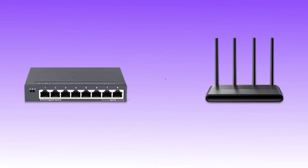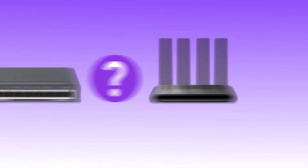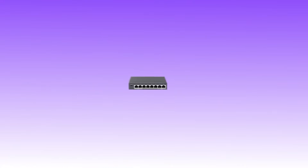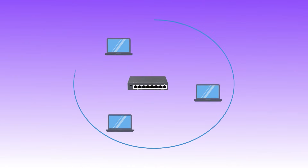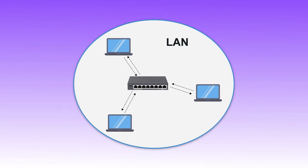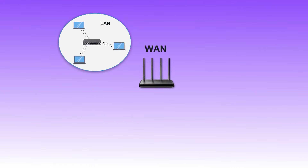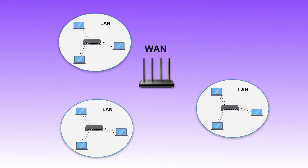First, let's understand the difference between a switch and a router. In a home network, a switch is mainly responsible for connecting multiple devices within the local network and providing data exchange. A router is used to connect different LANs or WANs, allowing them to communicate with each other.